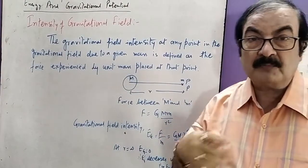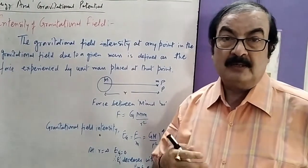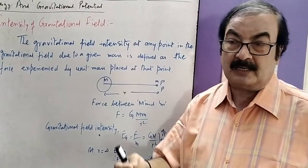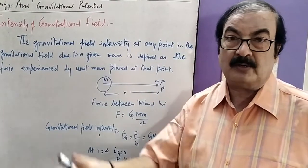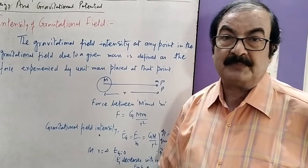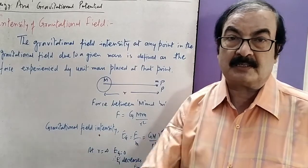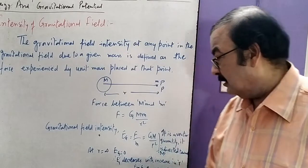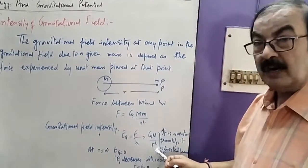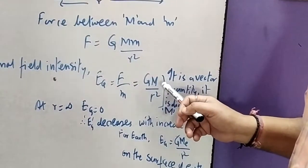We are experiencing the amount of force that we are in Earth's gravitational field. We can feel the effect of the Earth. If we keep the body on Earth, we can see the distance of Earth's gravitational field. The intensity of Earth's gravitational field will be G·M upon R squared.